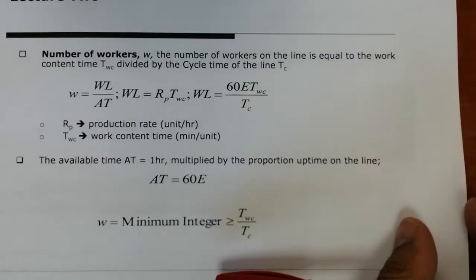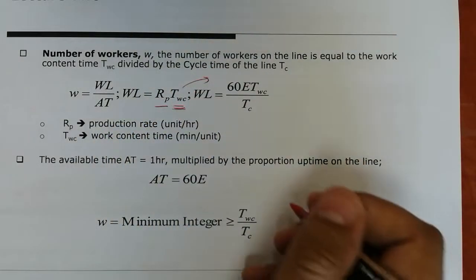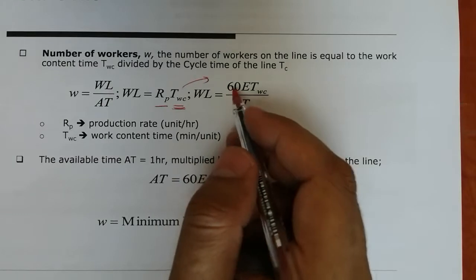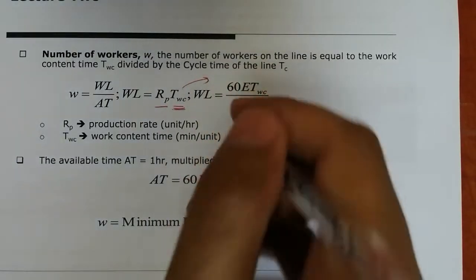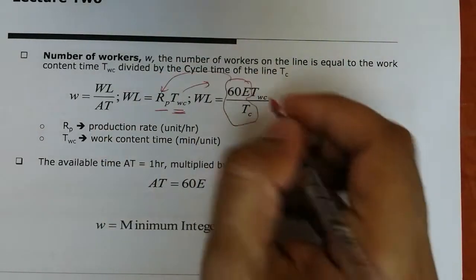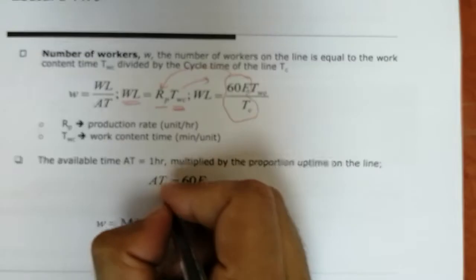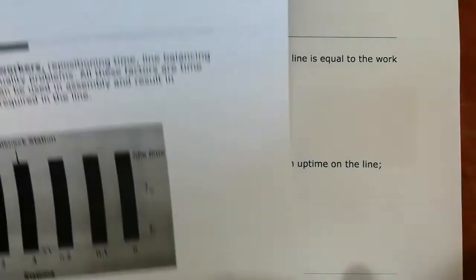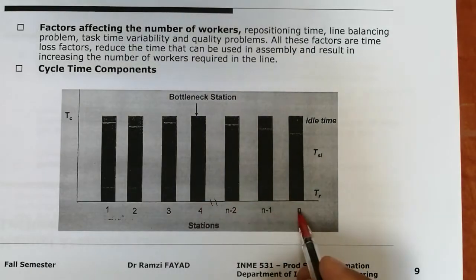The available time is always 60E after deducting inefficient time. This step is extremely important. We have several stations starting from one to N. This is the bottleneck station which defines the cycle time. Let's draw exactly three stations: station one, station two, and station three, each with repositioning time TR — the time given to the operator to go back to the start of the cycle.